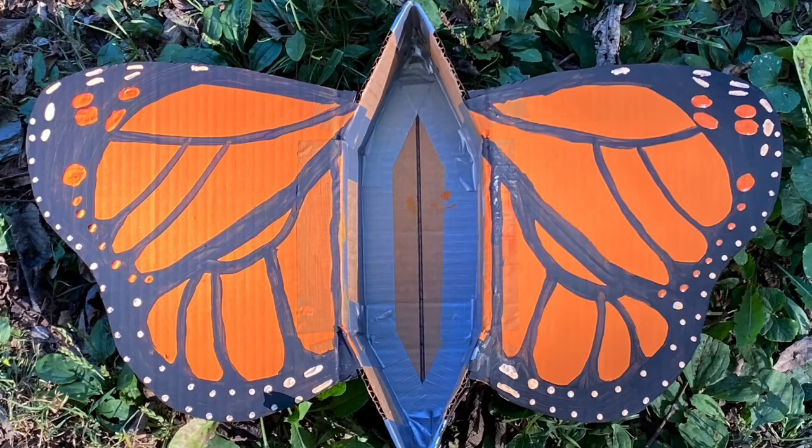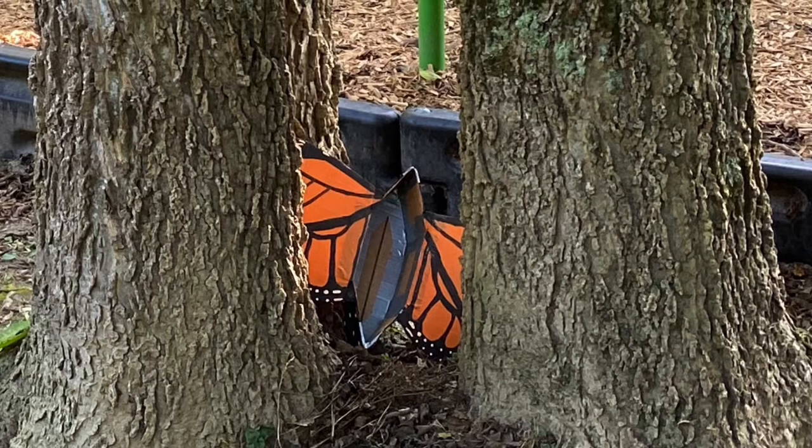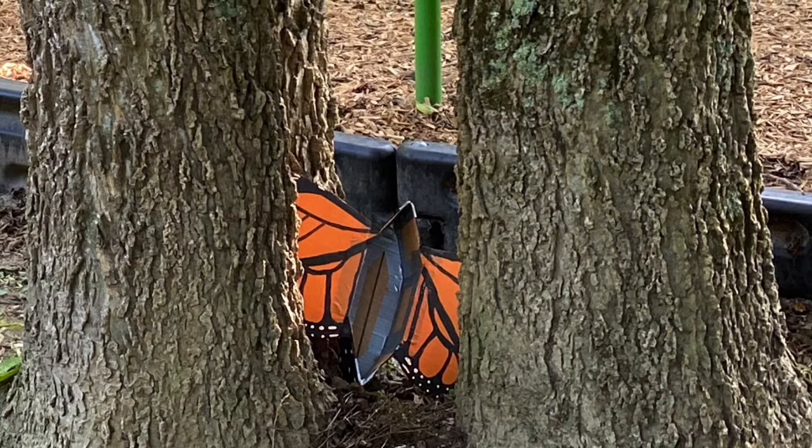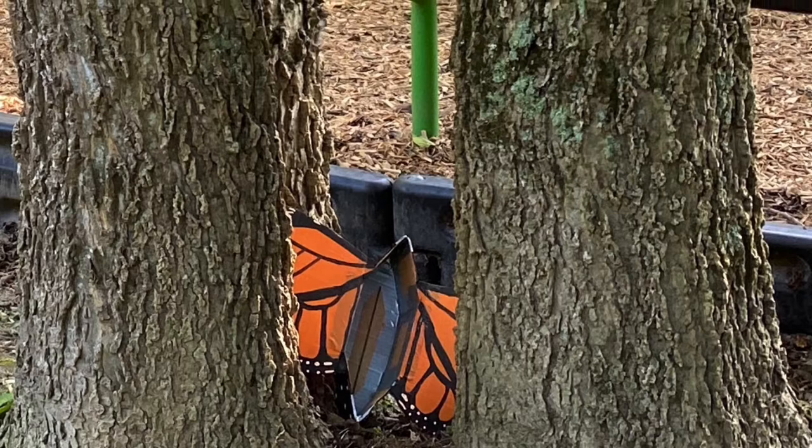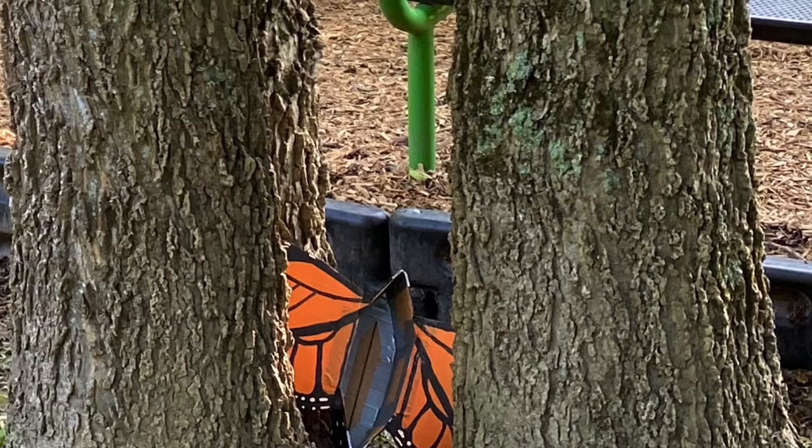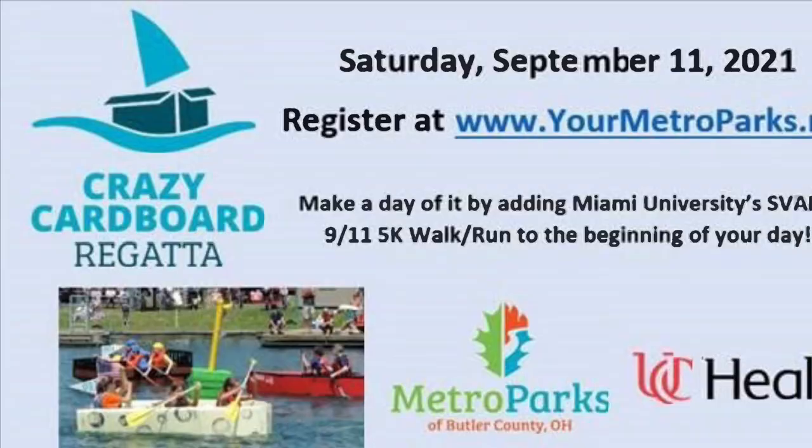Here we are with the final and completed miniature cardboard boat. I call it float like a butterfly. This small boat is hidden somewhere in the park at Indian Creek Metro Park at the Springfield Road area. Do you think you'll be able to find it? If you do, take a picture of yourself with float like a butterfly and follow the instructions on the bottom of the boat. You'll be entered into a drawing for a chance to receive a free boat registration for the crazy cardboard boat regatta.